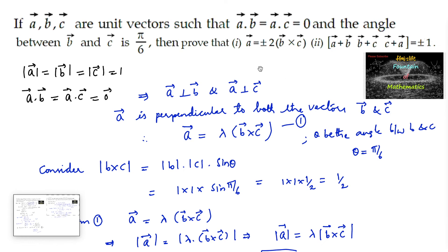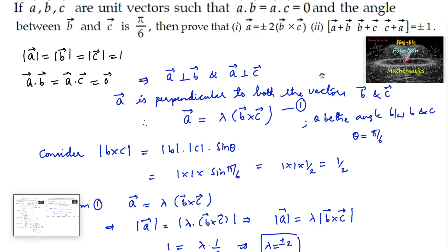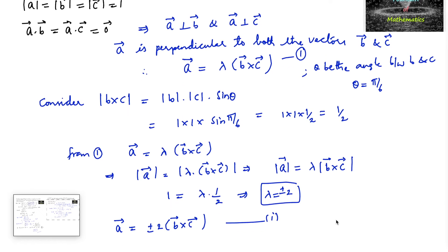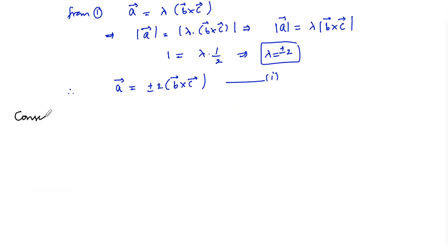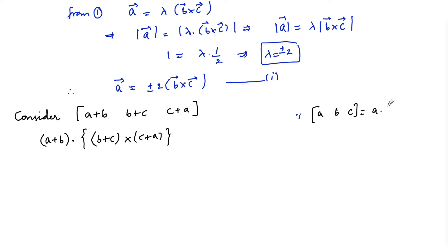Now we need to prove that the scalar triple product [a+b, b+c, c+a] = ±1. Consider [a+b, b+c, c+a], which can be written as (a+b)·[(b+c)×(c+a)], using the definition that [a, b, c] = a·(b×c).